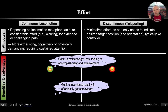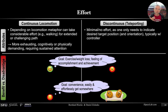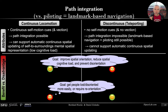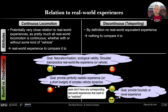Conversely, if you're just interested in quickly getting somewhere easily and convenience is a key point, then continuous locomotion methods might not be the best choice, whereas a more couch potato-like interface like teleporting might be much better suited. We'll discuss more of these attributes and implications in the paper, including path integration and the relationship to real-world experiences.